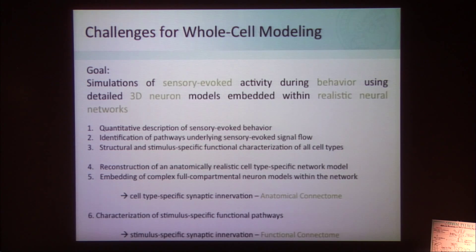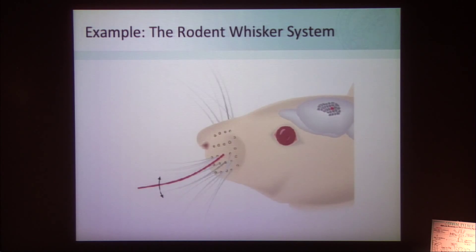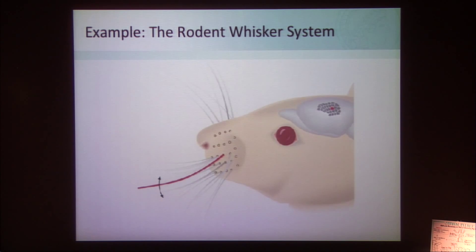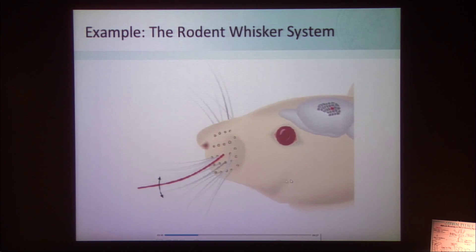The example system we're going to show you how this may be achieved is the rodent whisker system. What is so nice about it is that there is a somatotopic relationship between an individual whisker on the animal's snout and a segregated structure in the sensory cortex called a barrel column. An individual whisker is represented by an individual barrel column in the sensory cortex, and neighboring barrel columns reflect neighboring whiskers on the animal's snout.